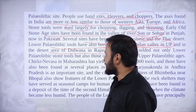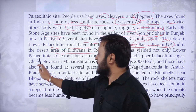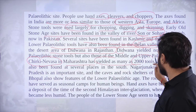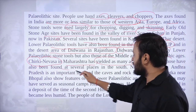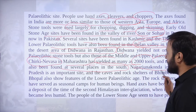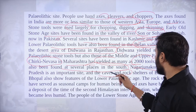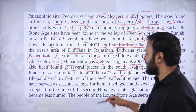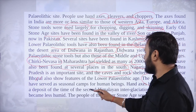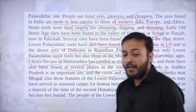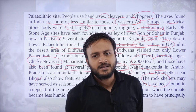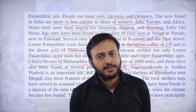There is a place called Charki Navasa in Maharashtra that has yielded as many as 2,000 tools. Other southern India sites include Nagarjunakonda in Andhra Pradesh. In Madhya Pradesh, the rock shelters at Bhimbetka near Bhopal and shelters in the Deccan have given several evidences of human presence.